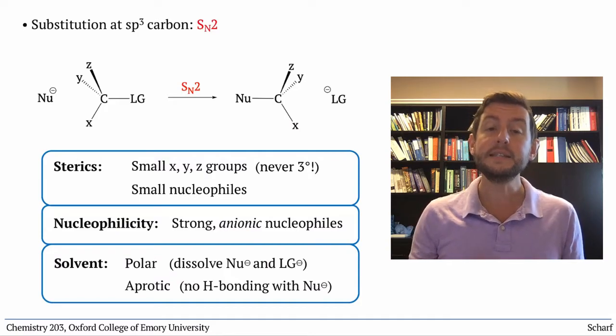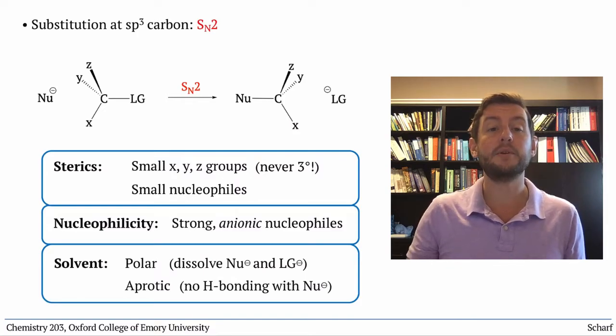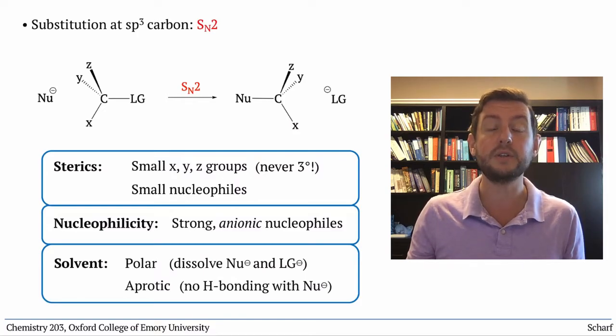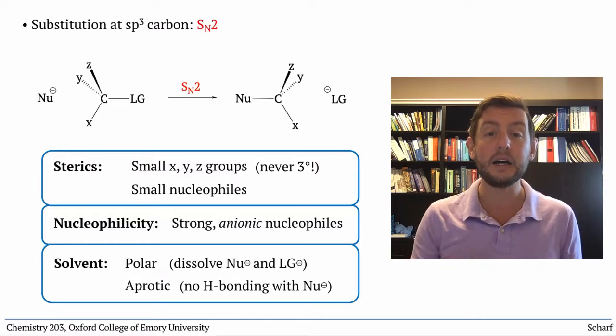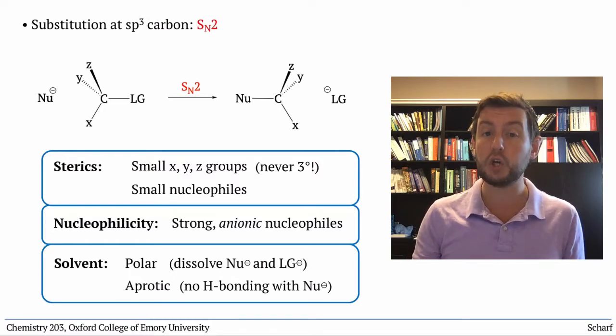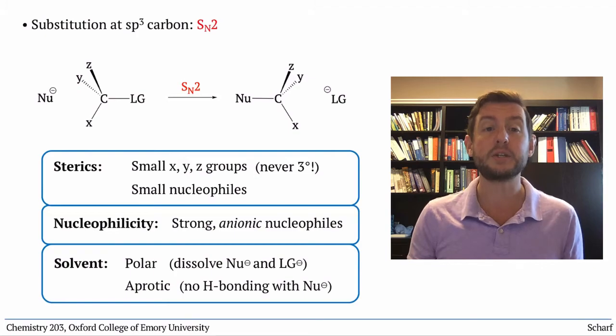In sum, SN2 reactions tend to happen when small anionic nucleophiles attack unhindered substrates with good leaving groups, especially in polar aprotic solvents.